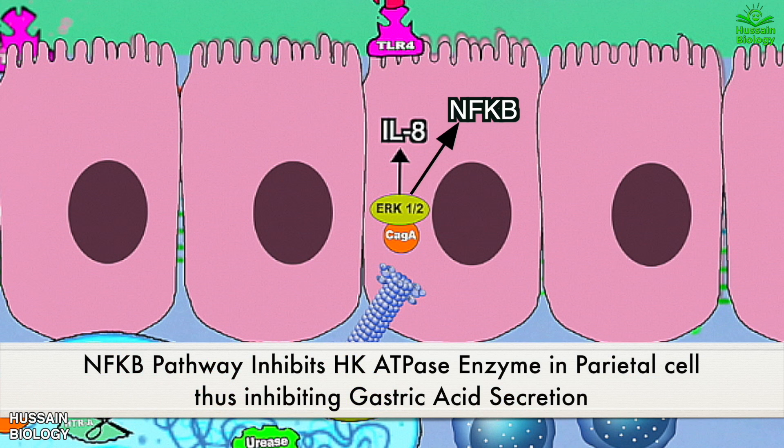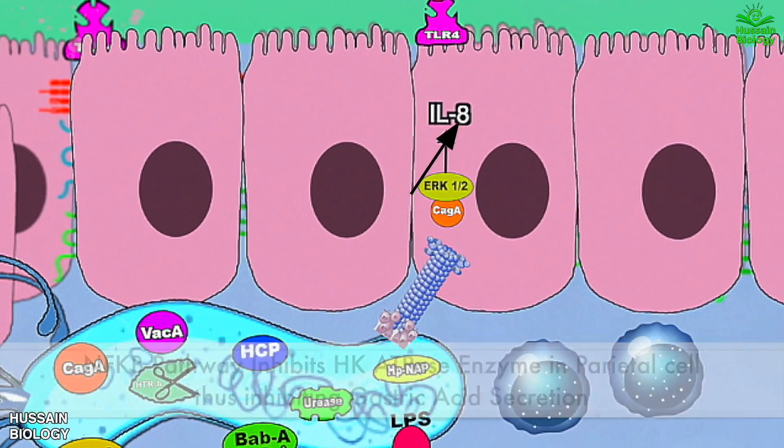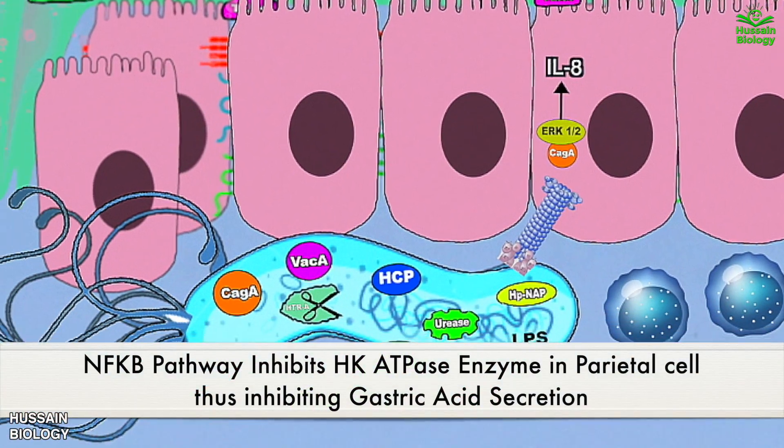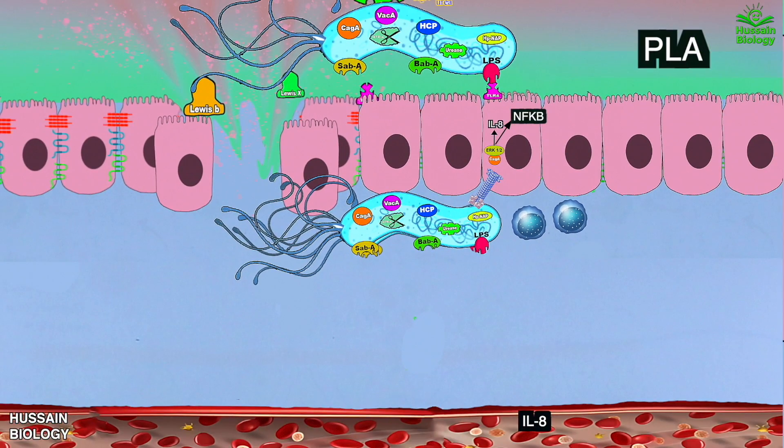H/K-ATPase is the key protein for secretion of gastric acid. When it is being inhibited during pylori infection, gastric acid won't be secreted, thus causing atrophic gastritis. We see that all these events over a prolonged time can lead to gastric cancer.